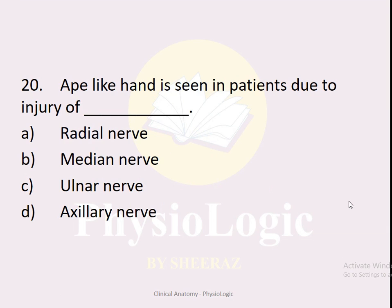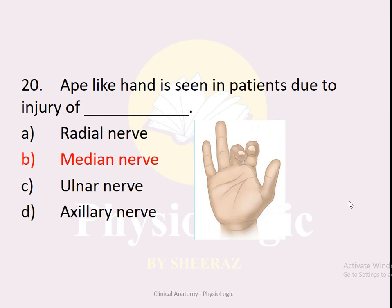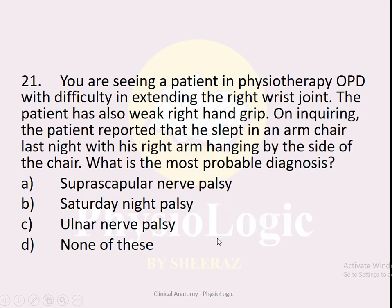MCQ number twenty: Ape-like hand is seen in patients due to injury of which nerve? Options: A — radial nerve, B — median nerve, C — ulnar nerve, D — axillary nerve. The correct option is B — median nerve. Injury to the median nerve results in a condition known as ape-like hand.